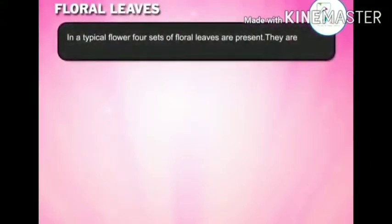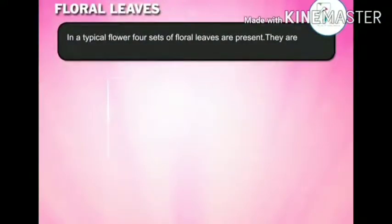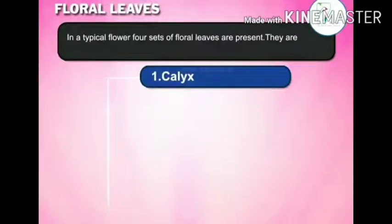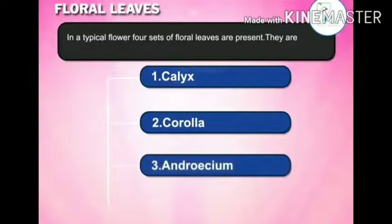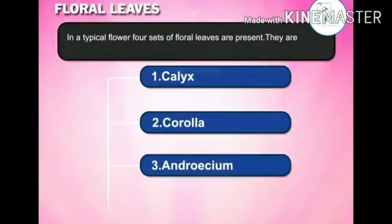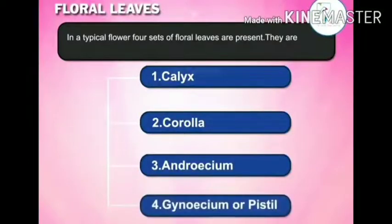In a typical flower, there are four sets of floral leaves present. First floral leaves are calyx; second floral leaves are corolla; third floral leaves are androecium; fourth floral leaves are gynoecium.